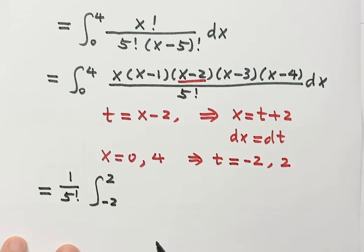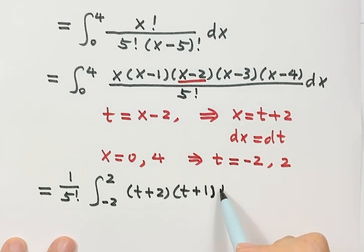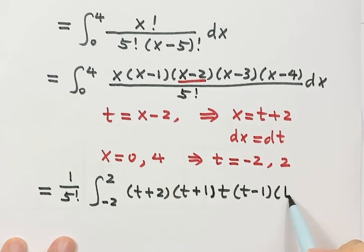The first one is t plus 2. Here we have t plus 2. Next one, t plus 1. Next, t. Then t minus 1. Then t minus 2 dt.